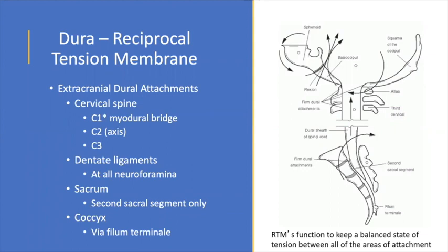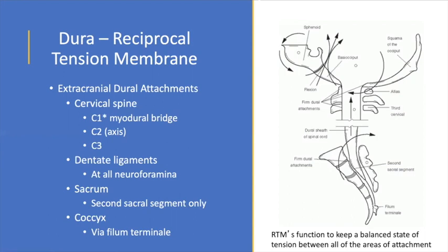The dura is a reciprocal tension membrane — this is the basic model from osteopathy in the cranial field. This sagittal view shows our theorized motions during flexion. Because the dura attaches to all of the bones — the cervical spine, the skull, the entire spine through dentate ligaments, sacrum and coccyx — this is where the term craniosacral manipulation comes from. A motion in one causes motions in the other bones, and this is how the primary respiratory mechanism — as Dr. Sutherland called it, not craniosacral rhythm — was propagated.